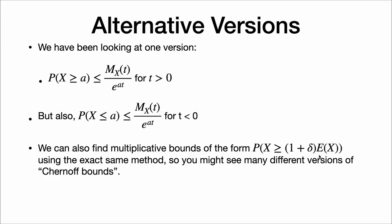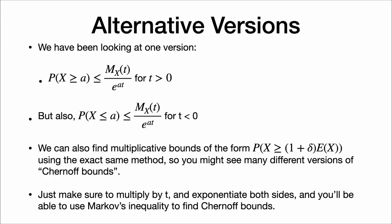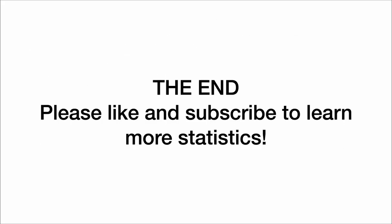So you might see many different versions of Chernoff bounds. Just make sure to multiply by t and exponentiate both sides, and you'll be able to use Markov's inequality to find the Chernoff bound. Thanks for watching — please like and subscribe to learn more statistics.